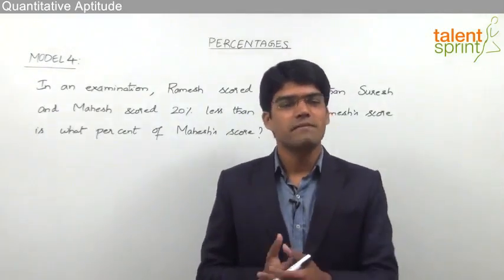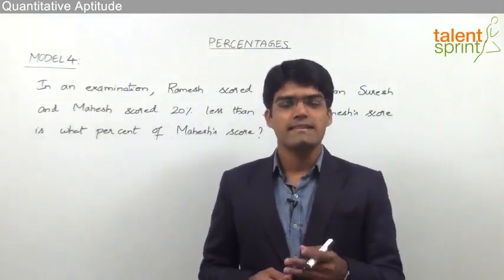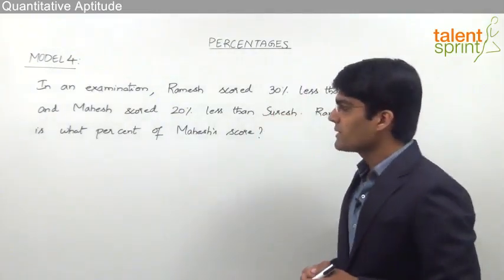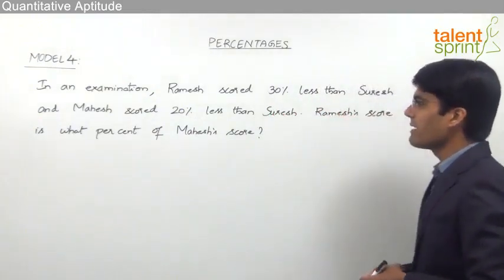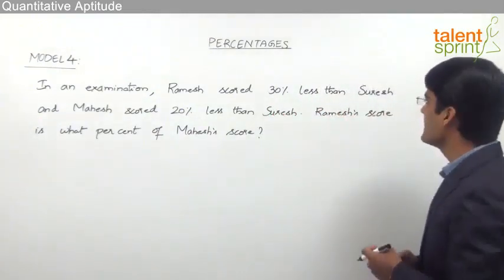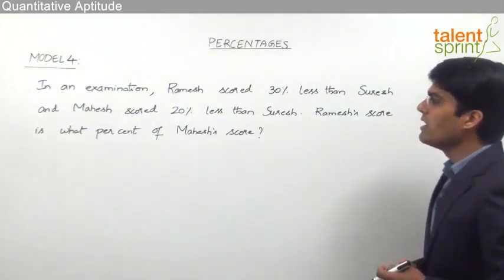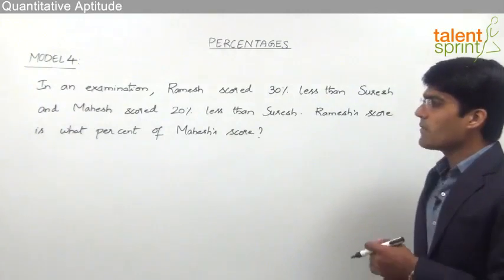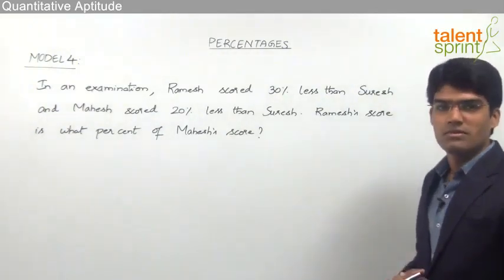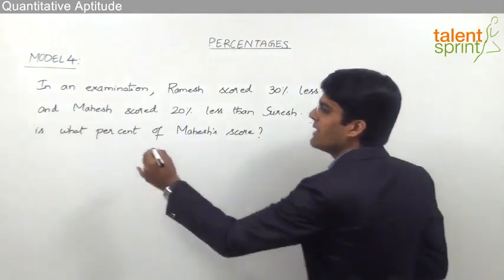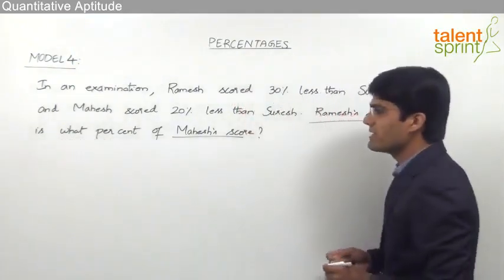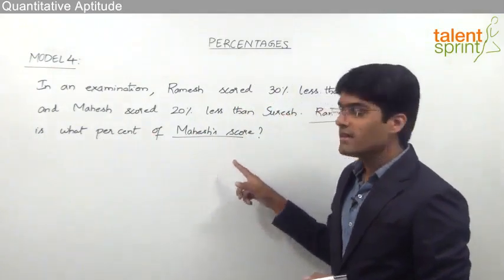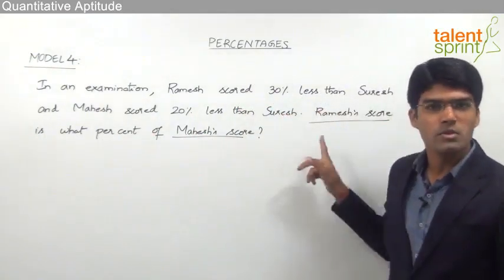Let us now take an example based on the model x is what percent of y equals x by y into 100. The question is: in an examination, Ramesh scored 30 percent less than Suresh and Mahesh scored 20 percent less than Suresh. Ramesh's score is what percent of Mahesh's score? This question is in the form of x is what percent of y, so our answer should be Ramesh's score divided by Mahesh's score into 100.